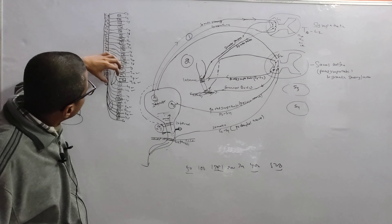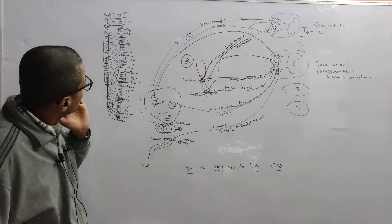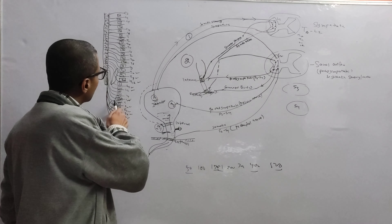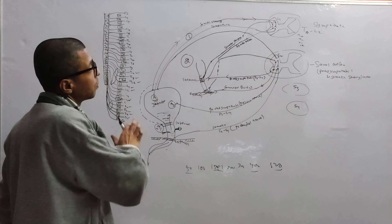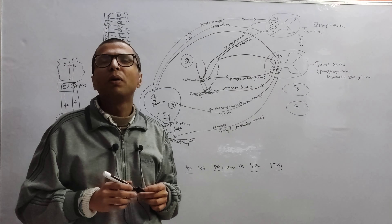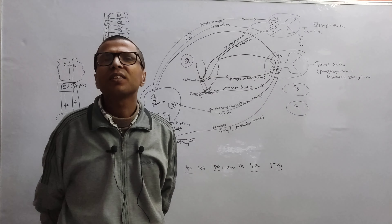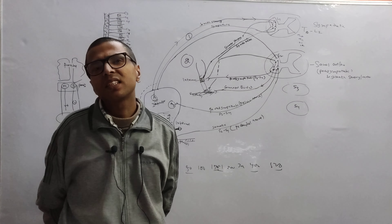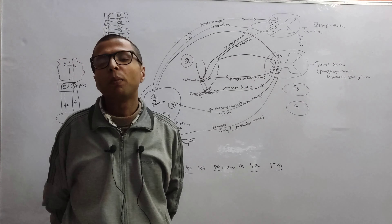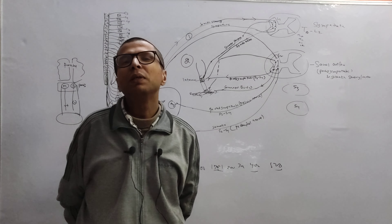Now let's look at the spinal cord and vertebra. The spinal cord segments and vertebra do not correspond as you go lower. The spinal cord ends at the lower border of L1 vertebra, but nerve fibers continue traveling downward through the CSF as a bundle of threads we call the cauda equina, while the vertebral column continues to the coccyx.